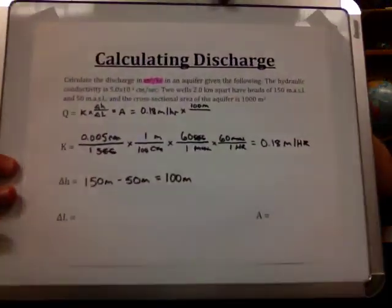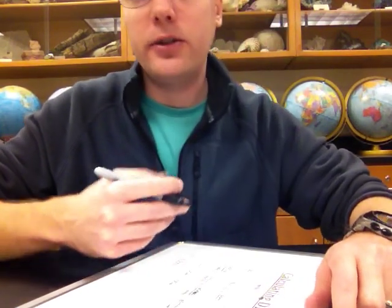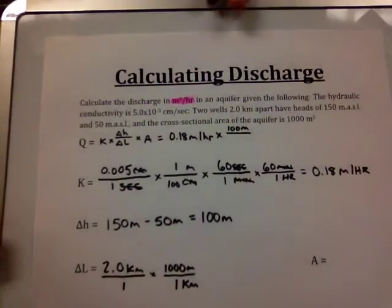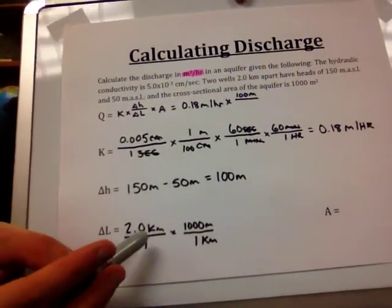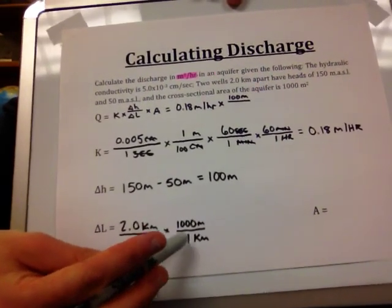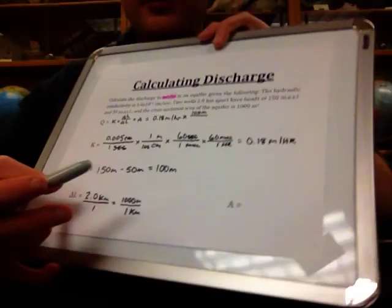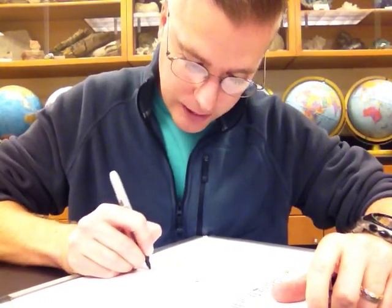For delta L, we're told the two wells are two kilometers apart. That's not in meters, so we need to convert. We set up a fraction: two kilometers over one, times 1,000 meters per one kilometer. The kilometers cancel, and two times 1,000 gives us delta L equals 2,000 meters.